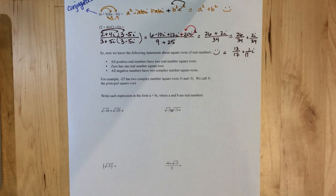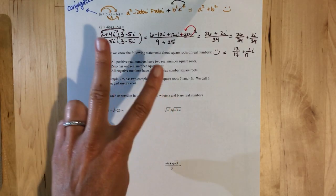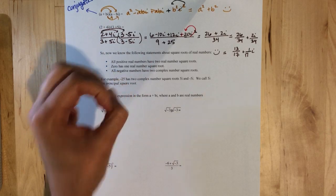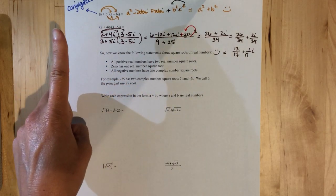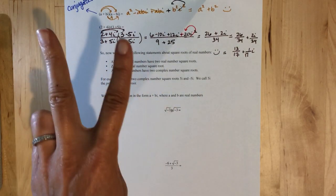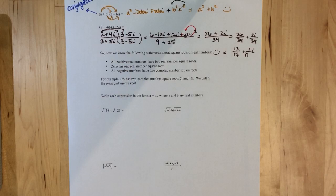So up to this point, now we know the following statements about square roots of real numbers. All positive real numbers have two number square roots, zero has one number square root, all negative numbers have two complex square roots, or two imaginary numbers.